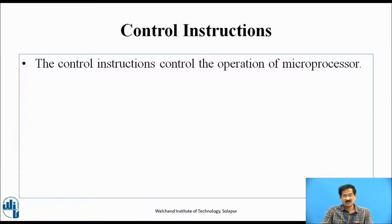Once the instruction is decoded, the control instruction is initiated to the various parts of the microprocessor to perform or execute the current instruction, and the program counter will point to the address of the next instruction.